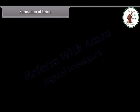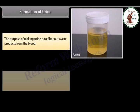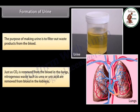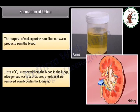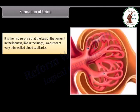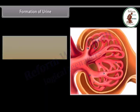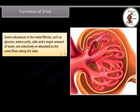Formation of urine: the purpose of making urine is to filter out waste products from the blood. Just as CO2 is removed from the blood in the lungs, nitrogenous wastes such as urea or uric acid are removed from blood in the kidneys. The basic filtration unit in kidneys, like in the lungs, is a cluster of very thin-walled blood capillaries. Each capillary cluster is associated with a cup-shaped end of a tube that collects the filtered urine. Substances like glucose, amino acids, salts, and a major amount of water are selectively reabsorbed as the urine flows along the tube.